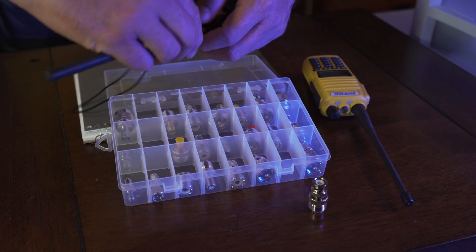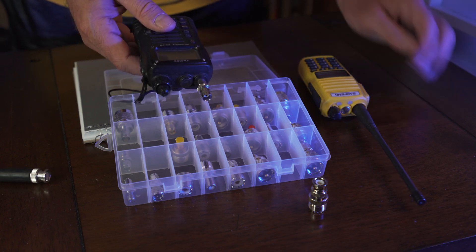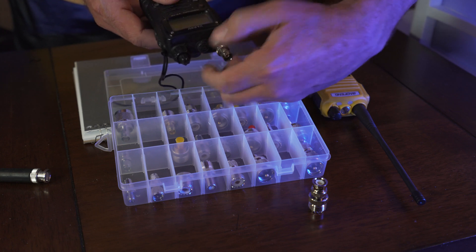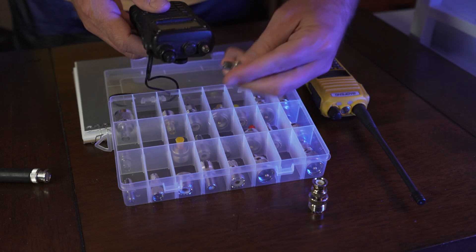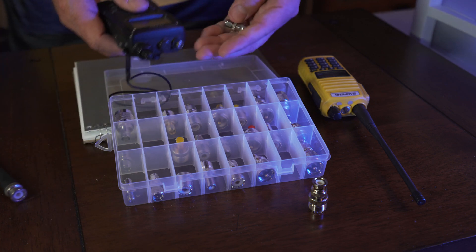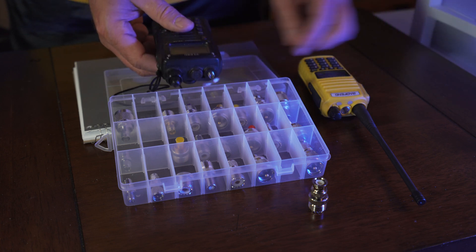Check this out - this right here is a connector for SMA. So this guy I purchased separately and I can do SMA to BNC. That's why you need an assortment because everything is a little bit different than you think.